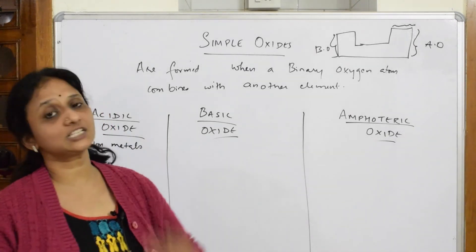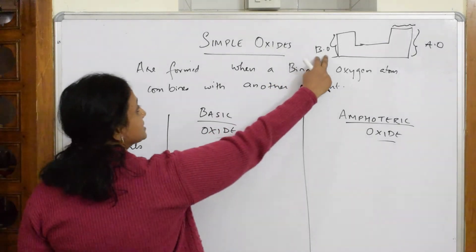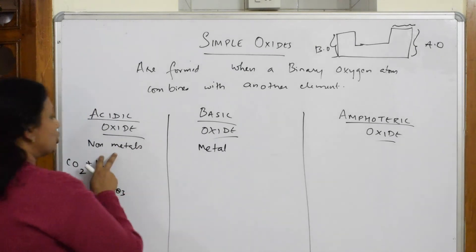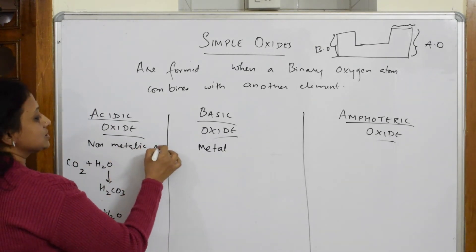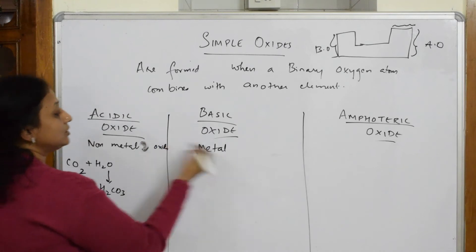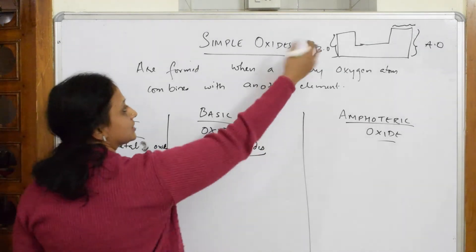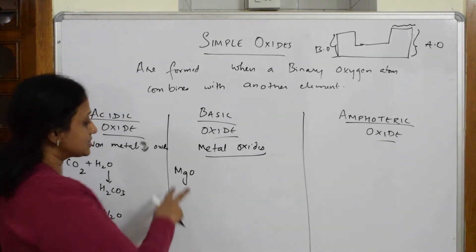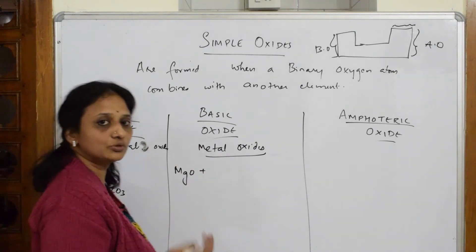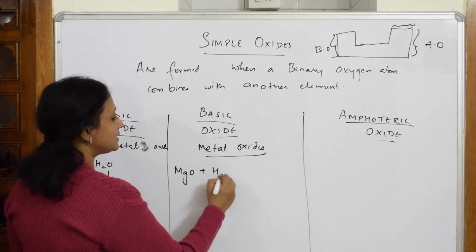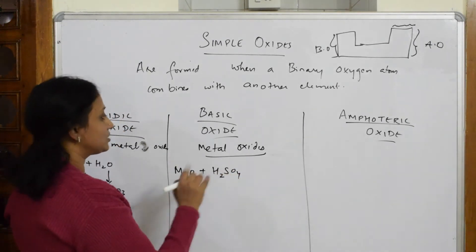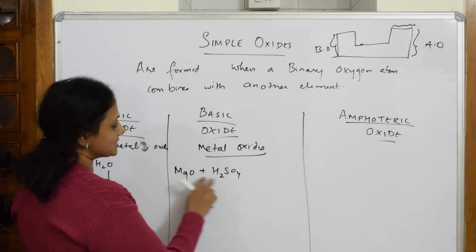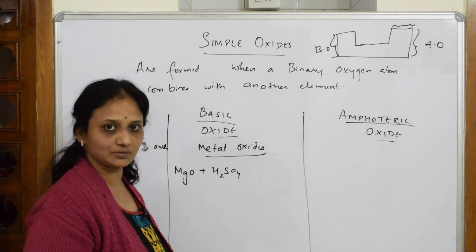When it comes to basic oxides, metals form basic oxides — these are metal oxides. Suppose I take magnesium oxide, which is a metal oxide. To prove it is basic in nature, I dissolve it in an acid. Acid plus base gives salt plus water. So adding MgO to H2SO4 gives MgSO4 salt plus water — hence proved. Metallic oxides are basic in nature.